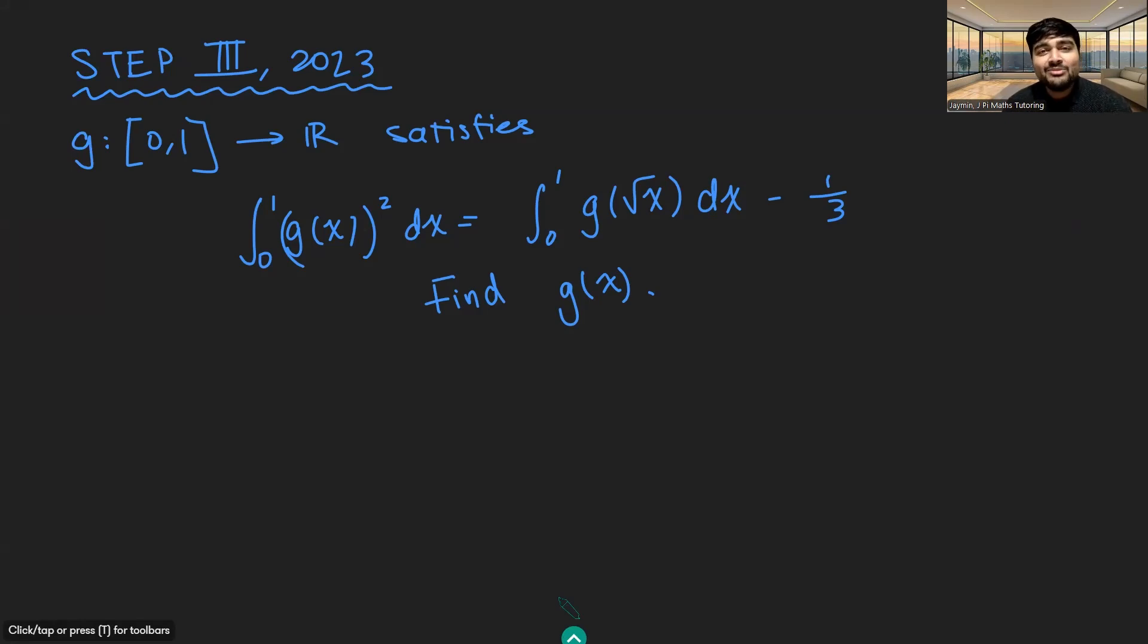Today I've got a problem from the University of Cambridge's entrance exam, called STEP, from last year. We have a function g from [0,1] to the reals, and it satisfies this equation: the integral from 0 to 1 of g(x) squared dx equals the integral from 0 to 1 of g(√x) dx minus 1/3. We want to find the function g(x).